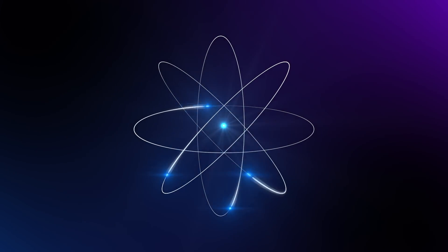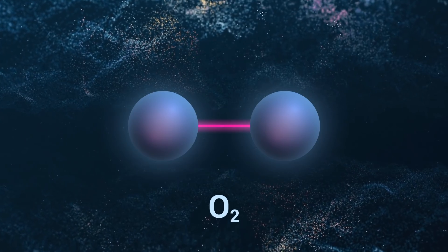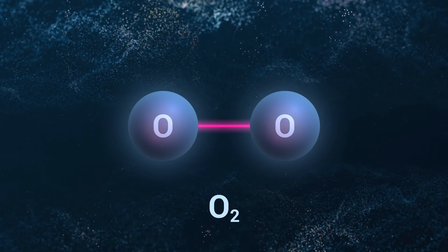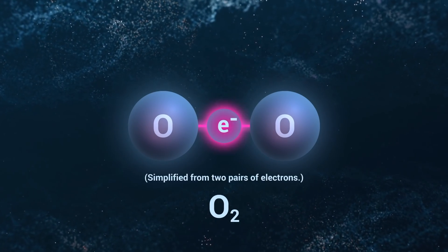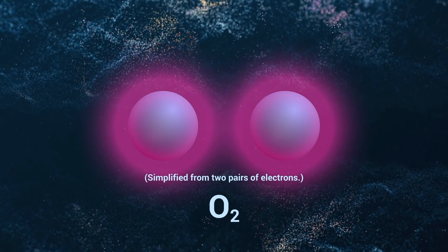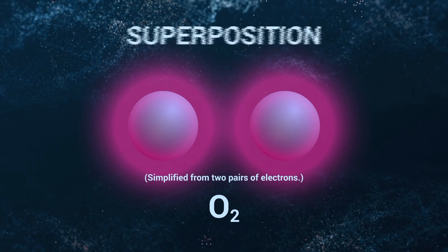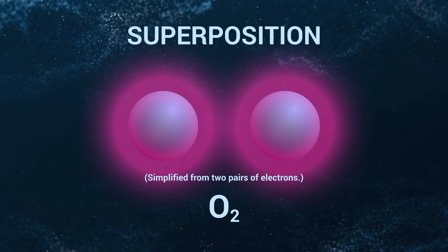This is an oxygen molecule, two oxygen atoms sharing an electron. The electron doesn't sit between the atoms. It exists around both of them at the same time. This is called superposition, and it holds molecules together. Without it, your body would fall apart.